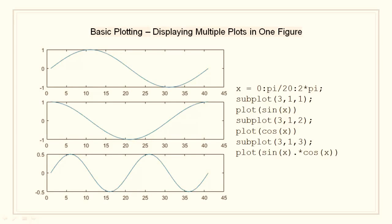For example, here in this code, I have plotted the data in three subregions of the same window. The first number in the subplot represents the number of rows. The second number in the subplot represents the number of columns. And the third number represents the current figure. In the first subfigure, we have plot sine. In the second subfigure, we have plot cosine. And in the third subfigure, we have plot sine into cosine.